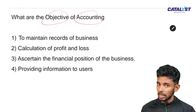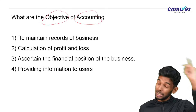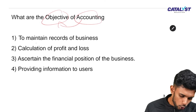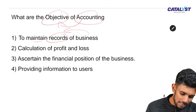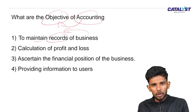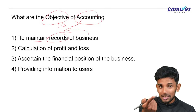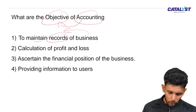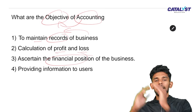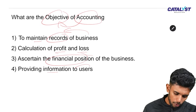Accounting has a very clear objective. We need to record transactions in business. We need to see the profit and loss of the business and the financial position. We need to provide information to the community and users. Then we also assist management.